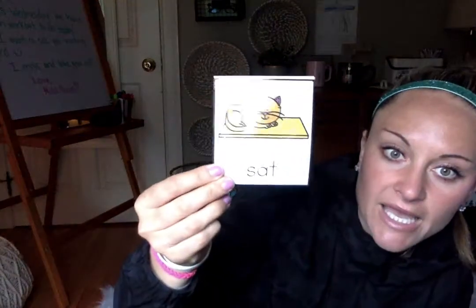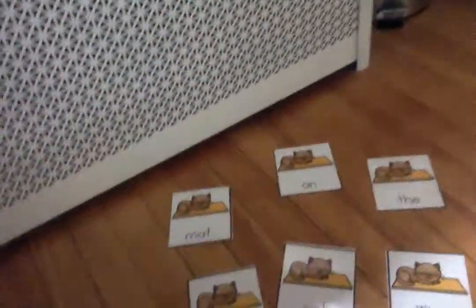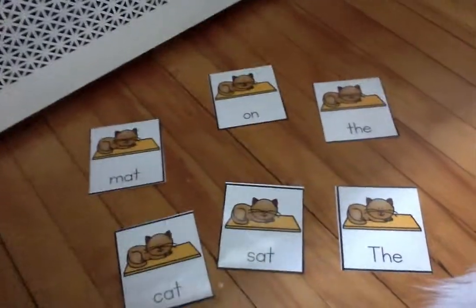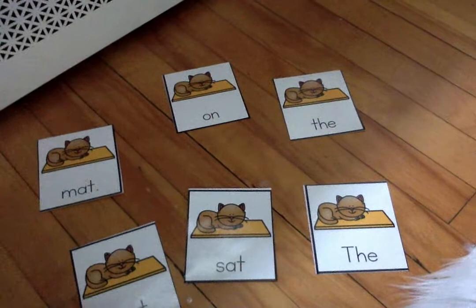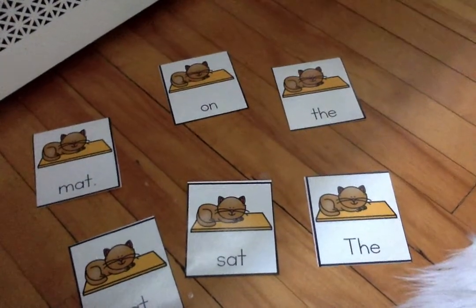Hi boys and girls. Miss House is here and I'm going to do a quick little mixed-up sentence lesson with you guys. I want to show you what Miss House has — I'm going to send you guys a picture of what these all look like. They're cards that have a word on them and they all have the same picture, but they each have a different word on it. It's going to be your job to try to unscramble them and put them in a sentence.